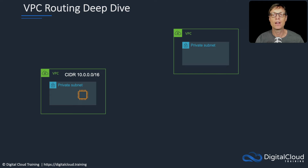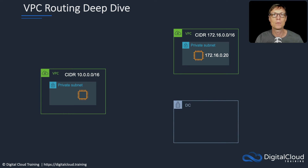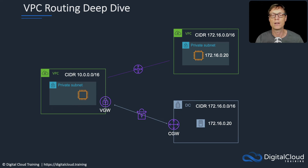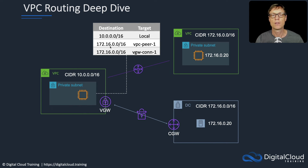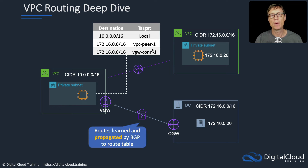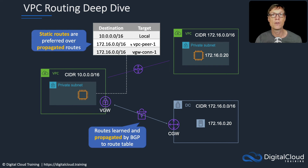Let's look at another example. We have another VPC with the same CIDR block as before, with an instance running in a private subnet. We then have an on-premises data center with a server running in it, and that server has the same IP address — so we've got the same overlapping problem again. We have a VPC peering connection to the top VPC and a VPN connection to the data center. In this case, we'd configure the route table with an entry for VPC peer one and an entry for the virtual gateway via connection one. The route for the virtual gateway is actually learned via BGP — it's a propagated route entering the route table dynamically — whereas the VPC peer entry is a static route. Static routes are preferred over propagated routes, so the static route will win and that's where the data will actually go.